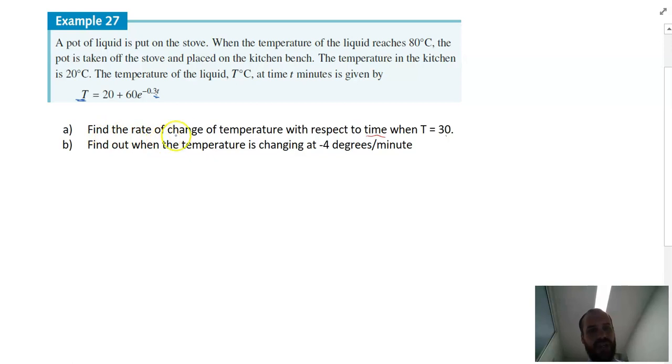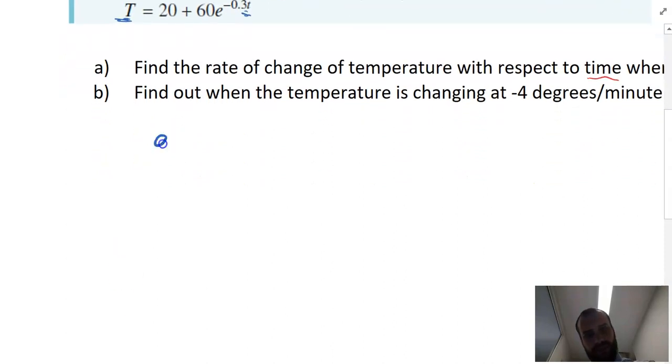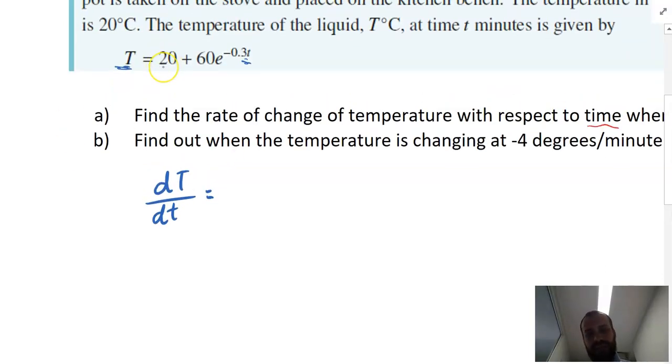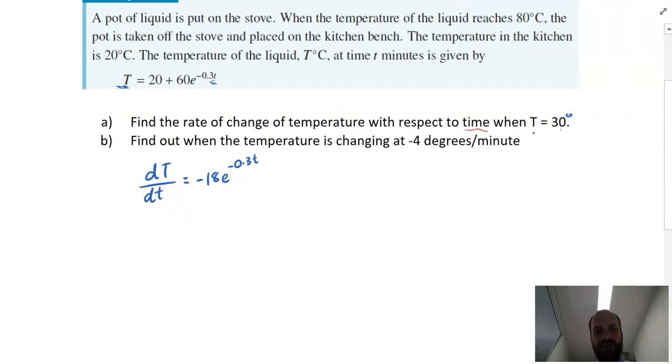Now, it says find the rate of change of temperature with respect to time when the temperature is equal to 30 degrees. So it's a rate of change style question, so I've got to find the rate at which the temperature is changing. That's the derivative of the temperature function. So the derivative of 20 is just 0, goes away. The derivative of this next bit, negative 0.3 times 60, is negative 18, and then e to the negative 0.3t. So that is my rate of change formula.